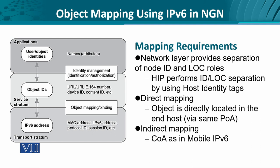The requirements which come out of this are: first of all, the network layer has to provide separation of the node identity and the locator roles. If you look at an IPv4 address in particular, it has two purposes. The first one is it identifies the location where this particular IPv4 address is situated, and it also identifies the object or the host to which it is bound. We have certain protocols like the Host Identity Protocol, which performs this decoupling between the ID and the locator purpose of the IP addresses by using identity tags.